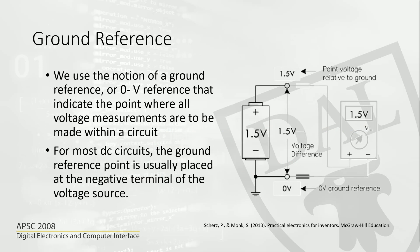Another important point to discuss in relation to voltage is the ground reference. If you have a very simple circuit with just one battery, we always take the negative terminal as the zero-volt ground reference. With this reference, there is always a potential difference of 1.5 volts.